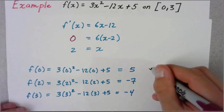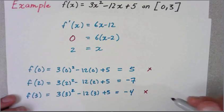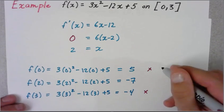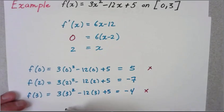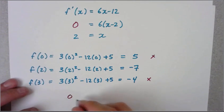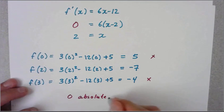If we look at this - remember this is an endpoint, that's the endpoint, that's the endpoint - we can tell the largest value is 5. So we could say here that 5 is our absolute max when x is 0. When x is 3, we get our absolute minimum.